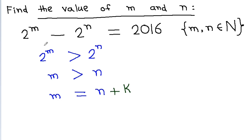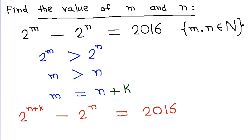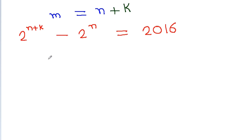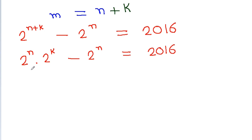Now we can rewrite the equation: 2 to the power m can be written as 2 to the power (n plus k), so we get 2 to the power (n plus k) minus 2 to the power n equals 2016. Then 2 to the power (n plus k) can be written as 2 to the power n times 2 to the power k, so taking 2 to the power n common gives us 2 to the power n times (2 to the power k minus 1) equals 2016.